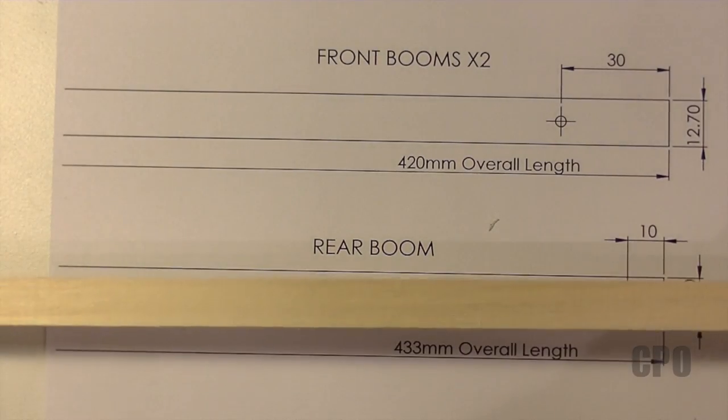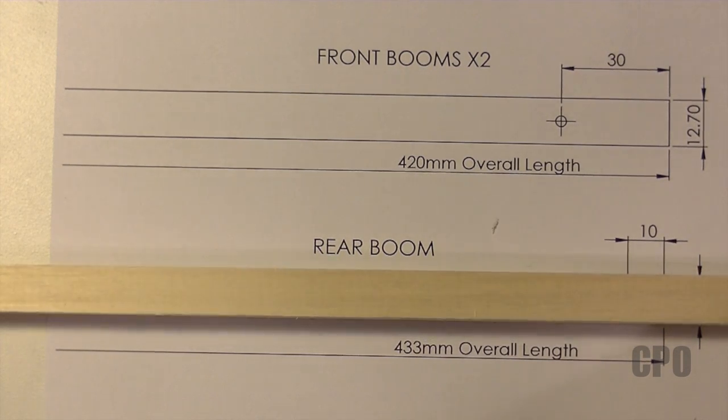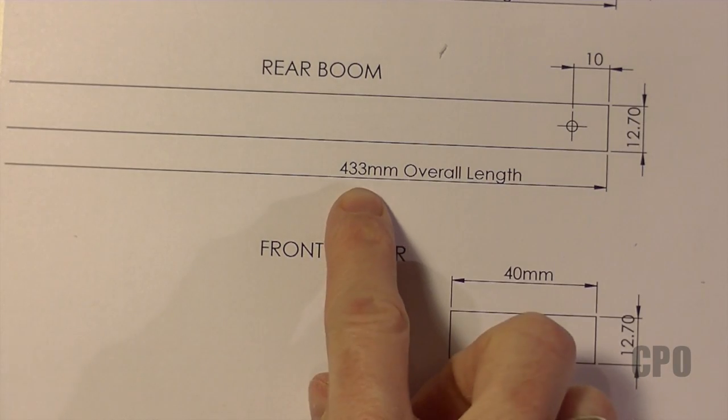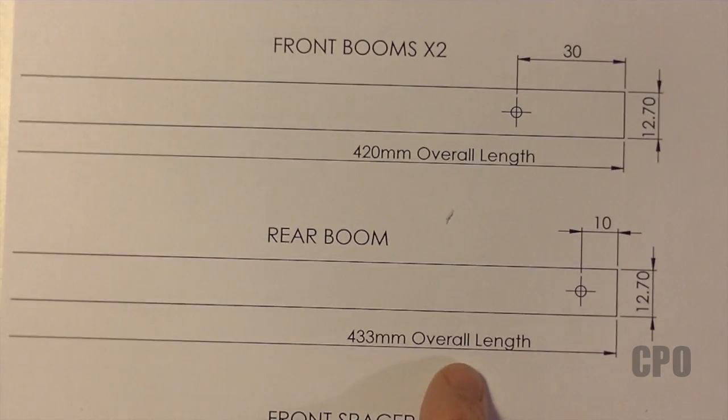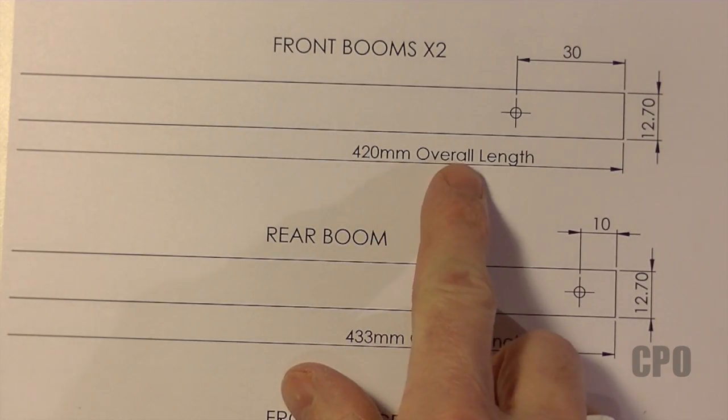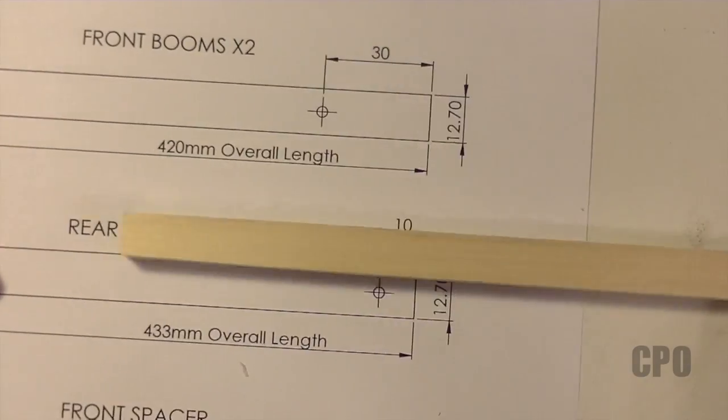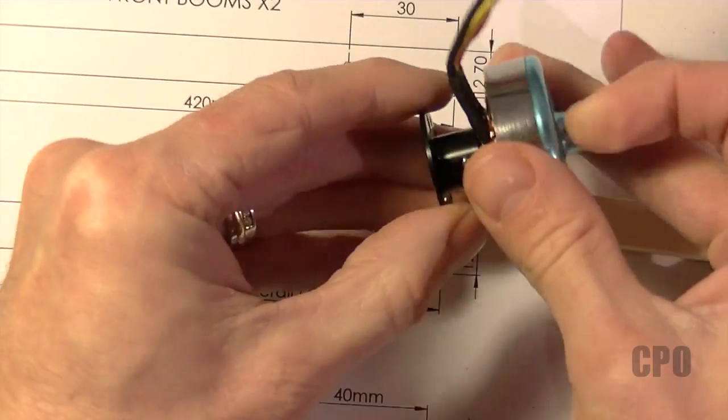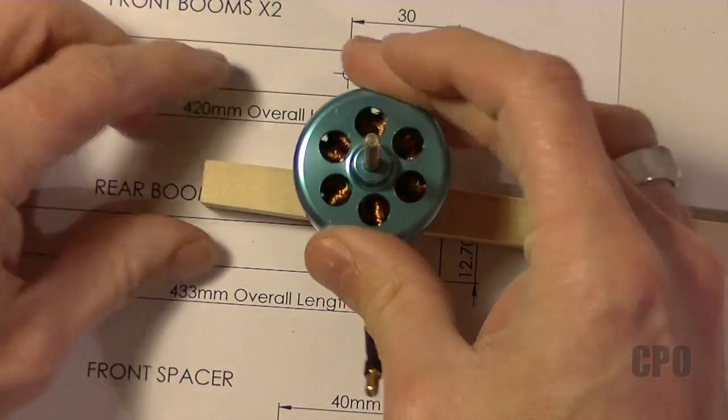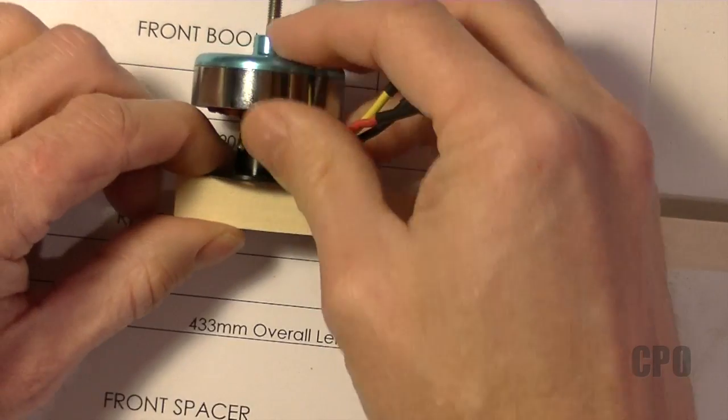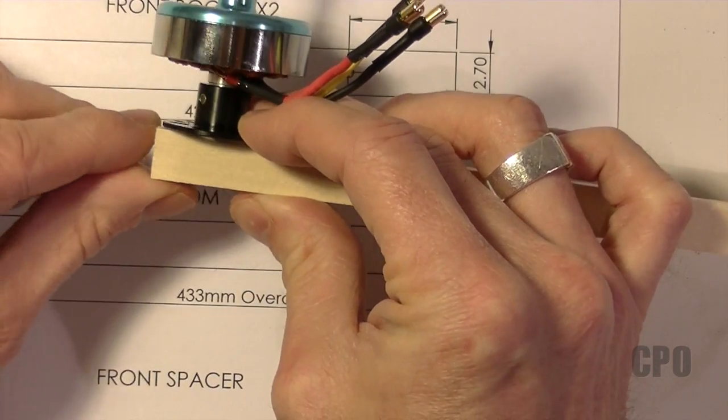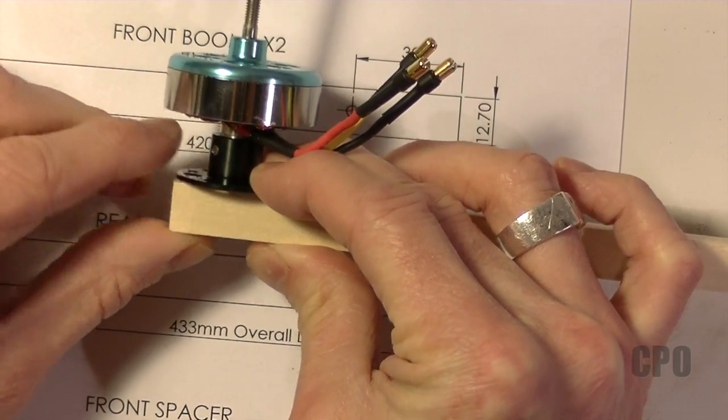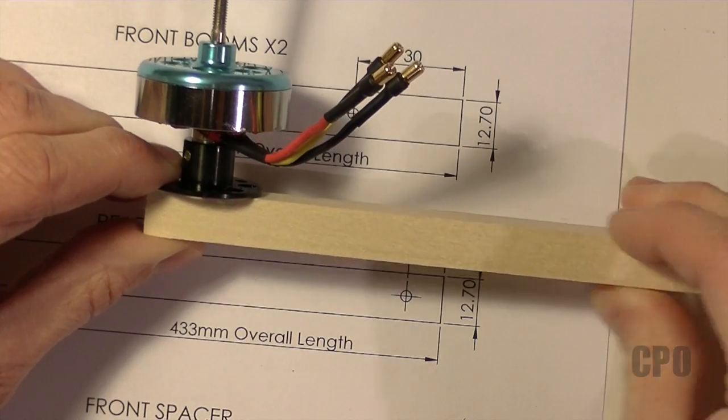Just like the body template, this printout is to scale. I've carefully calculated the design lengths for each of the booms, so as you can see, both the front and the rear have an overall length designator. For overall length, I'm basically referring to the length from the very edge of the motor mount all the way to the other side of the boom.